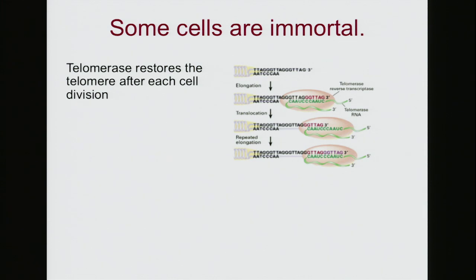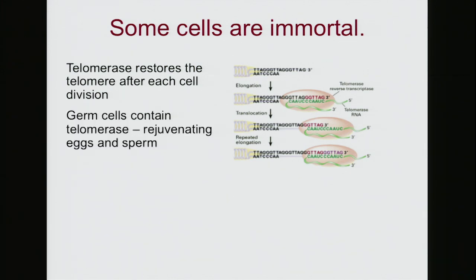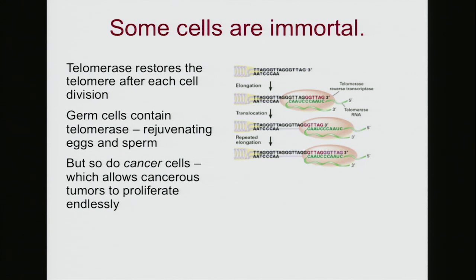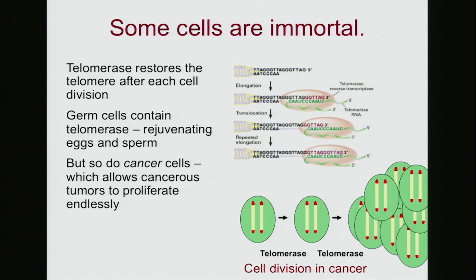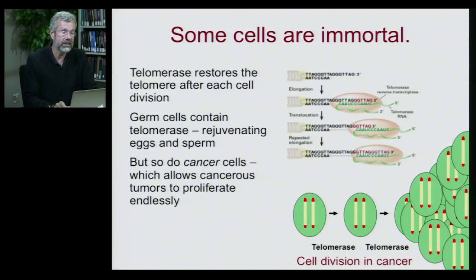Telomerase can restore the telomere after each cell division, and some particular cells in our body do have telomerase - especially important are our germ cells, so that sperm will have the right telomere length for healthy offspring. The rest of our body's cells do not have telomerase. The problem is that cancer cells also have telomerase, which is what allows them to proliferate endlessly. In a cancerous tumor, cells divide over and over again without the telomere shortening, growing a tumor that kills the individual. So telomerase is not a cure for aging that anyone would want to try.